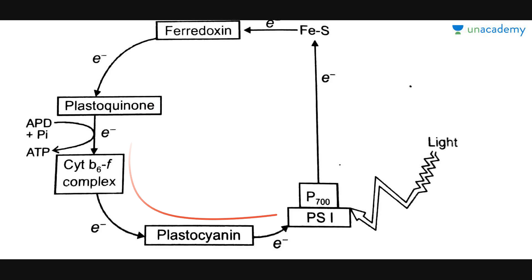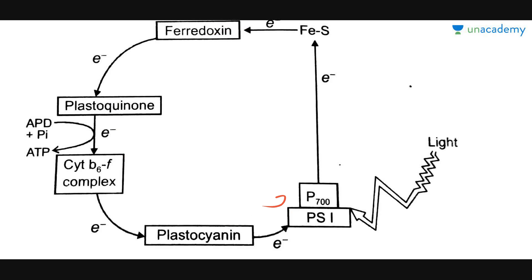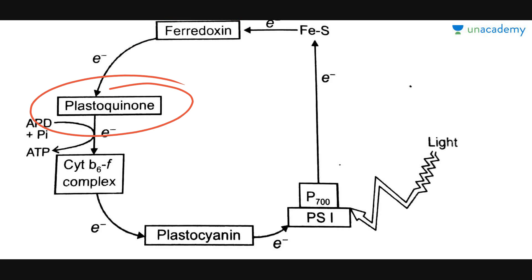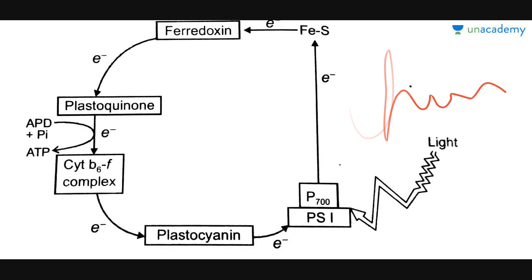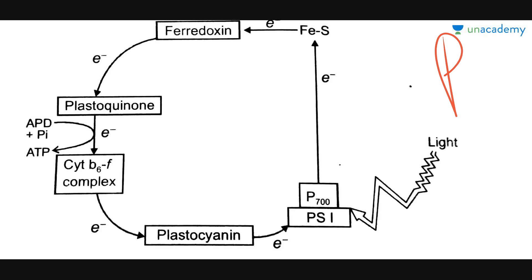What happens in cyclic photophosphorylation is that assimilatory powers in the form of ATP are produced. When the electrons are transferring through the various electron acceptors, energy is released. This energy released is in the form of chemical energy, and the chemical energy is further converted into ATP by plants. Plants convert the chemical energy released by the transfer of electrons and save that energy in the form of ATP. This is how ATP is formed in cyclic photophosphorylation.